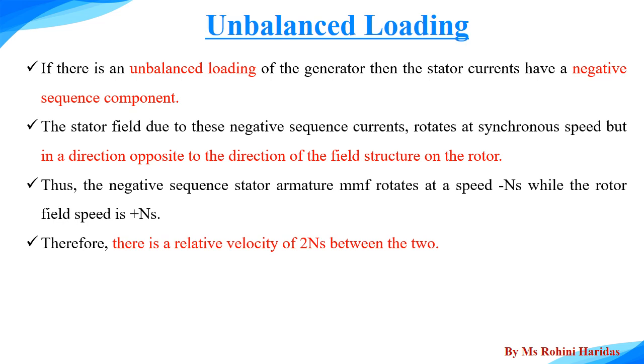We know that the relative speed is defined as the speed of moving object with respect to the another. When two objects are moving in the same direction, the relative speed is calculated as their difference. When two objects are moving in the opposite direction, the relative speed is computed by adding the two speeds.